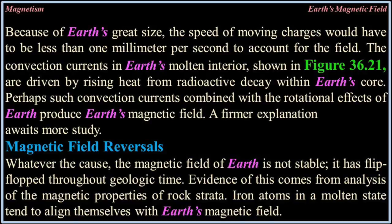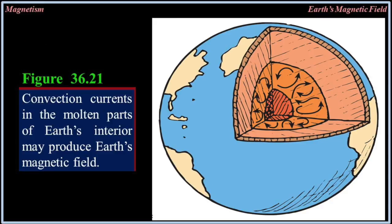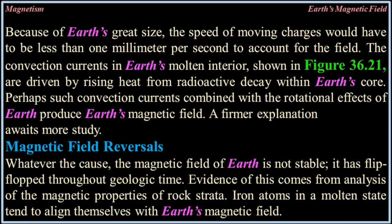The convection currents in Earth's molten interior are driven by rising heat from radioactive decay within Earth's core. Perhaps such convection currents combined with the rotational effects of the Earth produce Earth's magnetic field. A firmer explanation awaits more study.